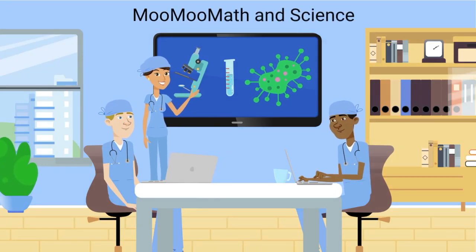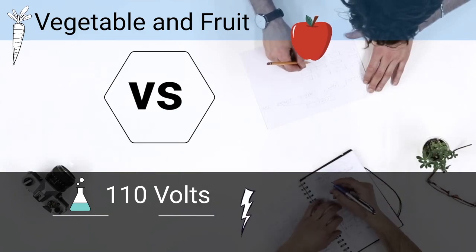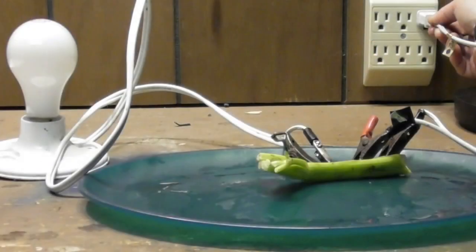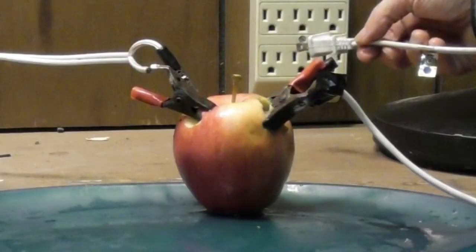Welcome to MooMooMath and Science in Vegetable and Fruit verse 110 volts. Let's see if we can run enough voltage through a vegetable, pickle, or fruit in order to light up a light bulb. So let's get started.